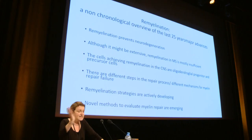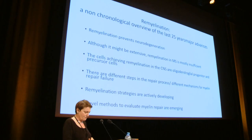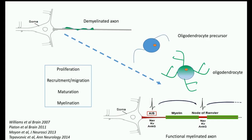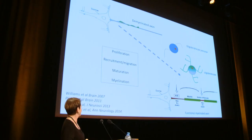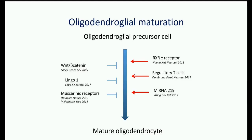Over the past 15 years, much has been learned about the different steps of the repair process, opening understanding of mechanisms for myelin repair failure or success. Steps include proliferation, recruitment of cells toward the demyelinated area, oligodendrocyte maturation, and the onset of the myelination process. Transforming a demyelinated axon into a fully remyelinated and functional axon requires the oligodendrocyte precursor to differentiate into an oligodendrocyte and wrap myelin sheaths.